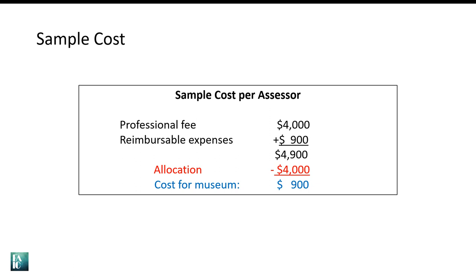Here is a sample fee scenario — remember that this represents one contract with one of your two assessors. Let's say the collections assessor charges a professional fee of $4,000, and her travel expenses are $900 to cover mileage, food, and hotel. That assessor's total fee would be $4,900. If your CAP allocation was $4,000, your museum would be responsible for the remaining $900. In the past couple of years, the average museum contributed around $1,300 to the total process, with actual museum costs ranging from next to nothing to a couple thousand. We encourage you to be prepared to budget some cash costs for the process.